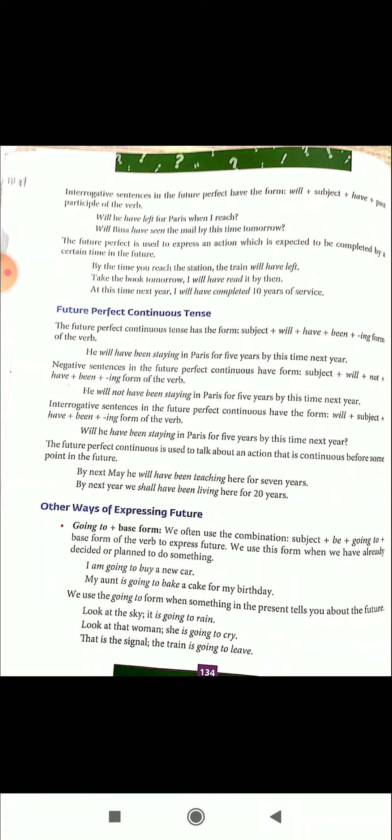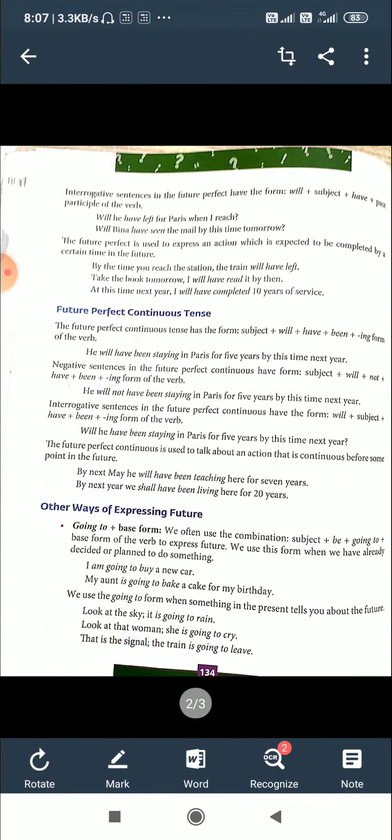Negative sentences in the Future Perfect Continuous have the form: subject plus will plus not plus have plus been plus ing form of the verb. For example: 'He will not have been staying in Paris for five years by this time next year.' Note the position of 'not' — it comes just after 'will,' not after 'have.' So 'He will not have been staying' is correct, while 'He will have not been staying' is wrong.